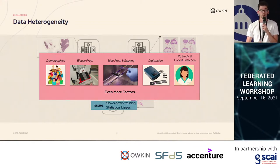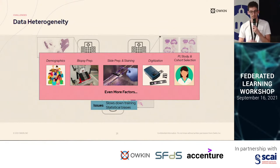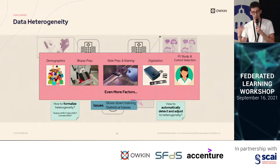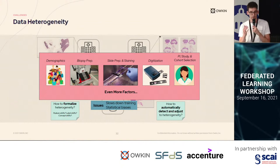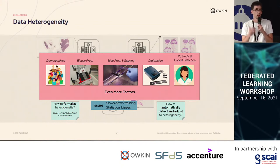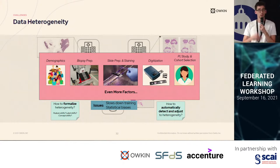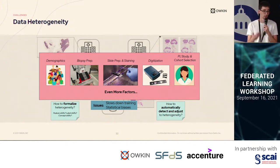As we have seen today, this can lead to a lot of issues and statistical biases. So the question is: how do we formalize this heterogeneity? Because heterogeneity is too broad, we need to define subtypes of heterogeneity and define adaptive methods for each subtype. Ideally, we need to find methods to automatically detect and adjust to these settings, so as to be able to work in the federated learning setting.